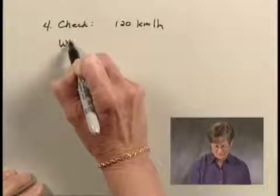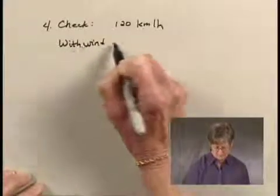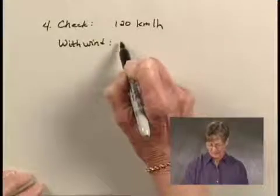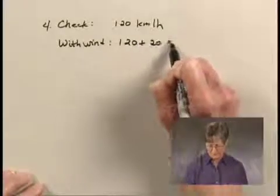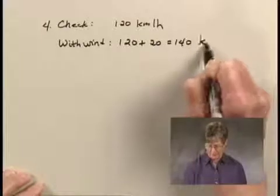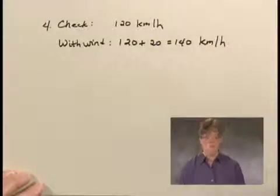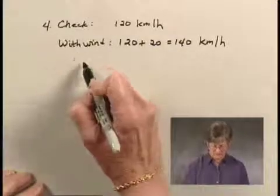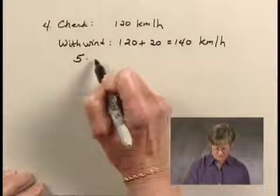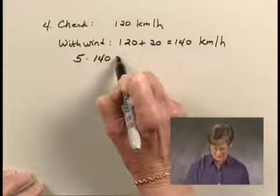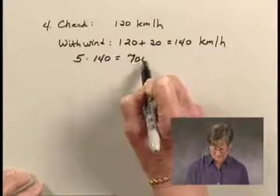If the plane is traveling with the wind and the wind is 20 kilometers per hour, its speed with the wind is 120 plus 20, or 140 kilometers per hour. We're told the plane travels a certain distance in 5 hours at this speed, so it travels 140 times 5, which is 700 kilometers.